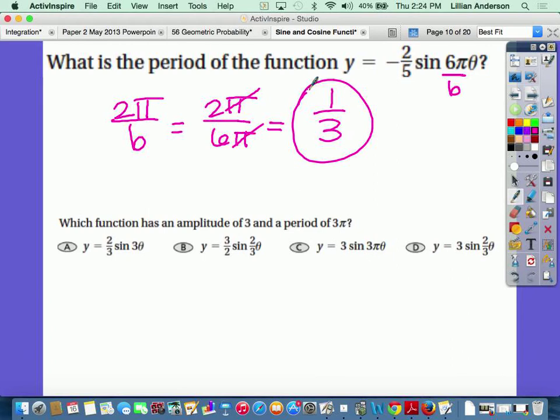Down here it says which function has an amplitude of 3 and a period of 3 pi. Now just based off of the amplitude being 3, which one should have been eliminated? A and b. Because that basically has an amplitude as a fraction. And we're not doing a fraction here.